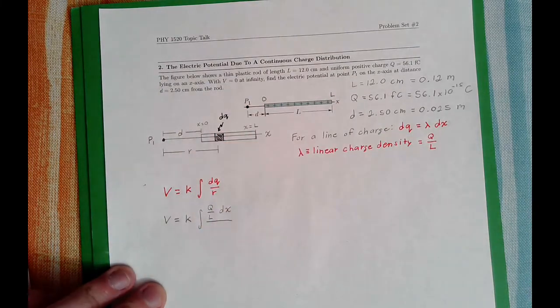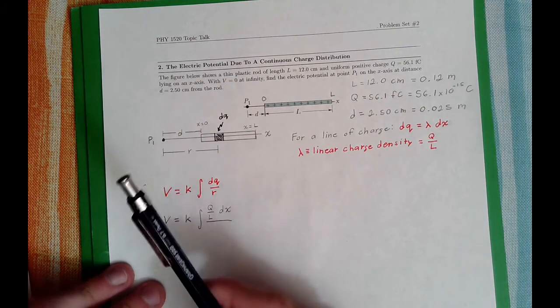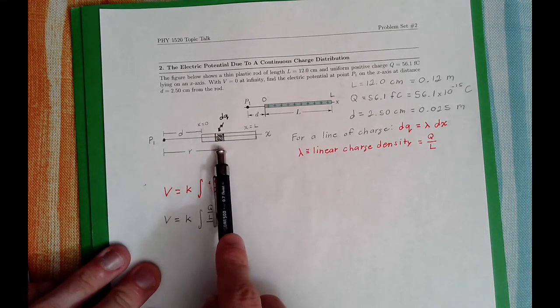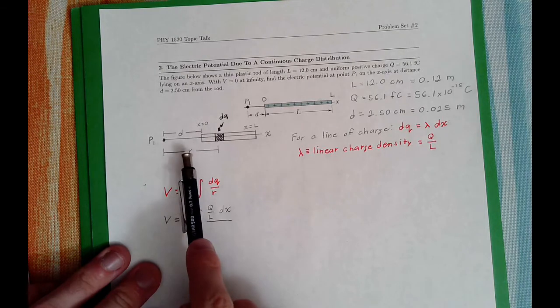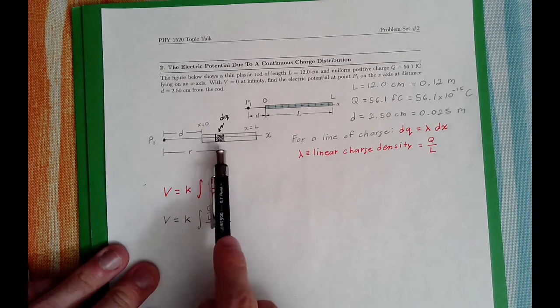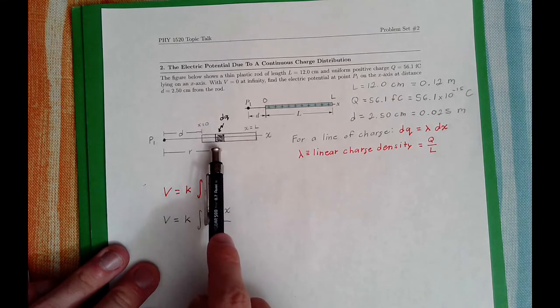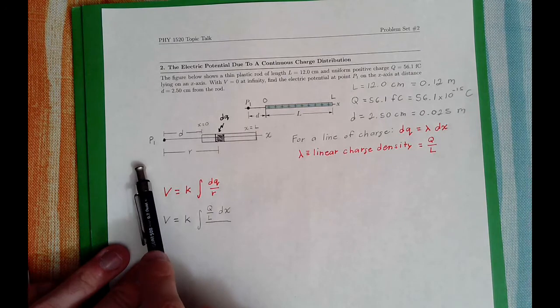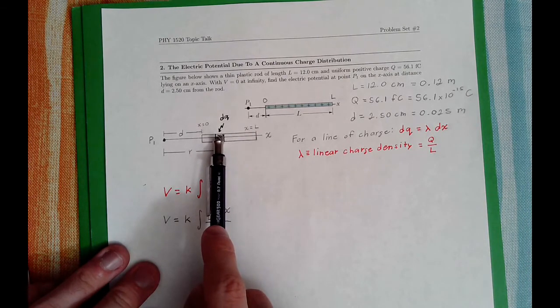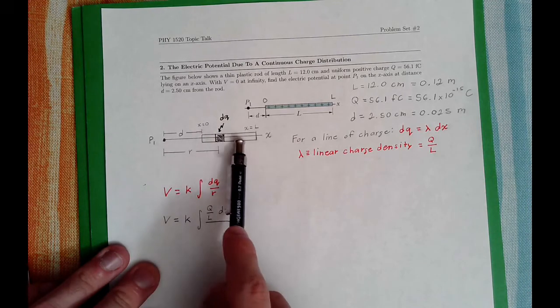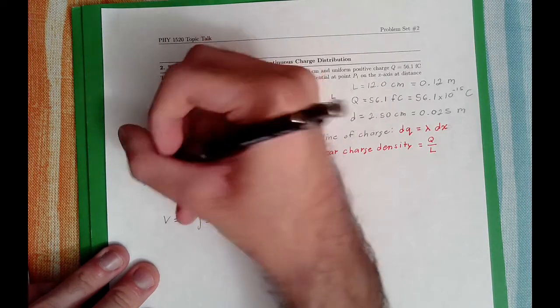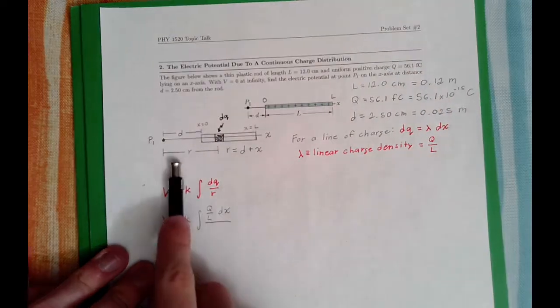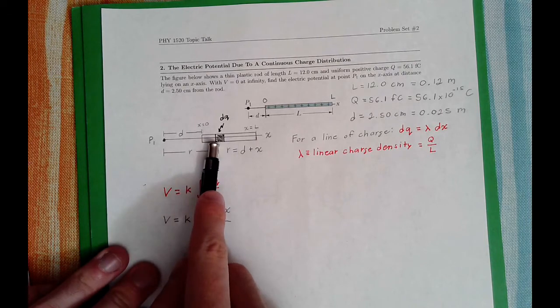This is over R. So what's R? Well, R is a separation distance between P1, the point where we would like to find the electric potential, and DQ. In this case, however, it's not constant. The value of R changes depending where DQ is, because DQ ranges from 0 to L, the length of the rod. It depends on the position that DQ is at, it depends on X. And we can see that R, in this case, is equal to D plus X.